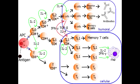Macrophage-lymphocyte interaction refers to the fact that while T-Helper 1 cells activate macrophages, macrophages can also activate T-Helper 1 cells. So activated lymphocytes and macrophages stimulate one another.